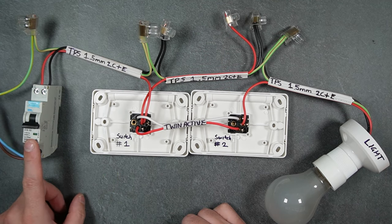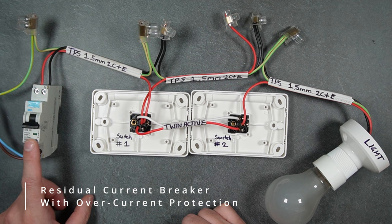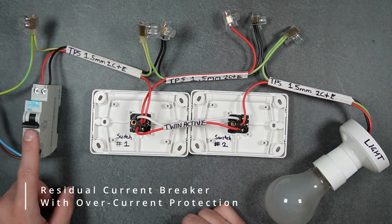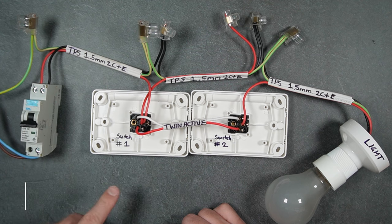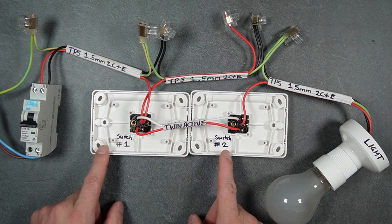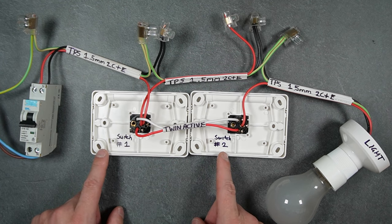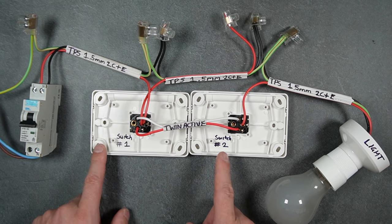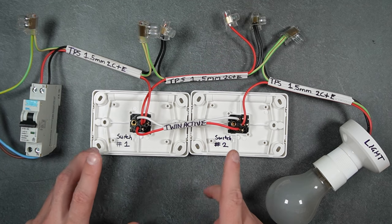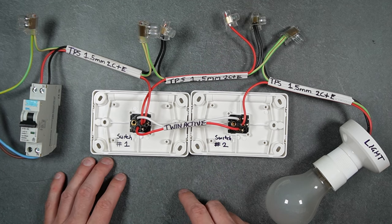This RCBO here is to simulate the one in your switchboard; this just isolates the entire circuit. I've got two switches because you actually need physically two switches to be able to create a two-way circuit. I've also